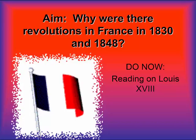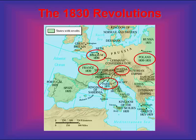Today we're going to be talking about why there were revolutions in France in 1830 and 1848 — basically, the continuing saga of crazy political instability in France. There's a series of revolutions that broke out in 1830, and a series of revolutions across Europe that broke out in 1848.